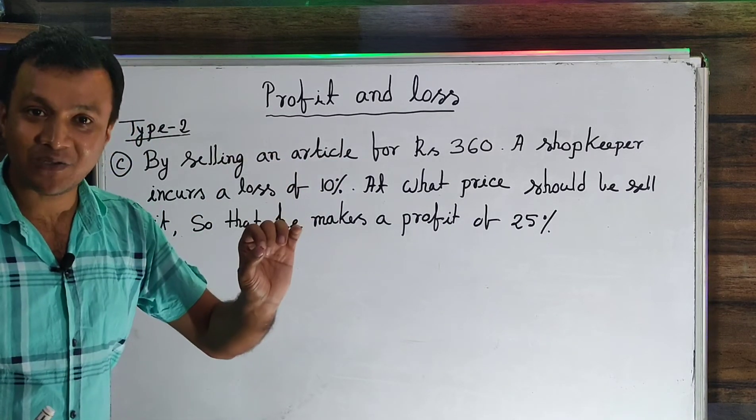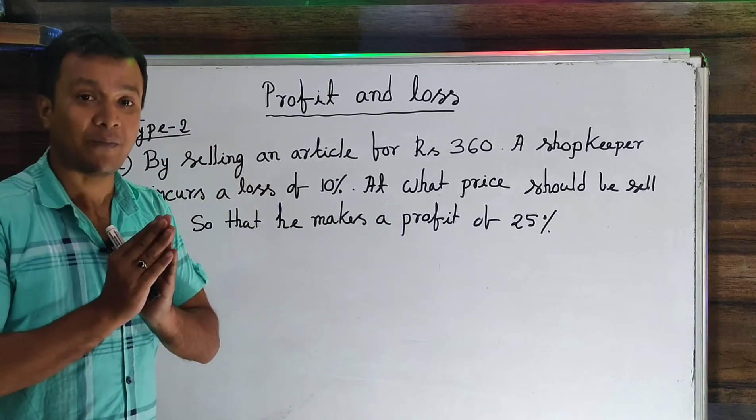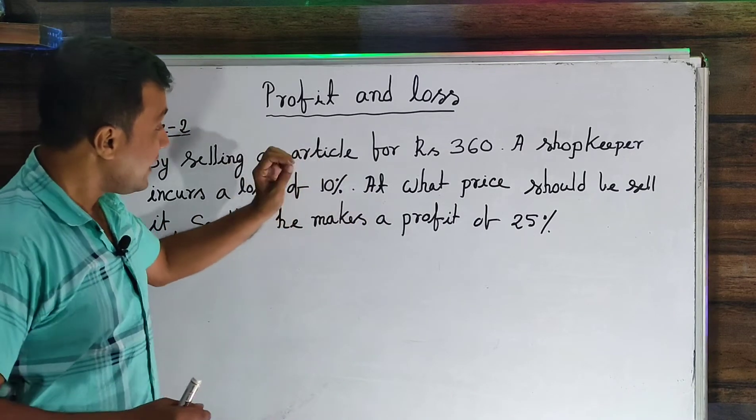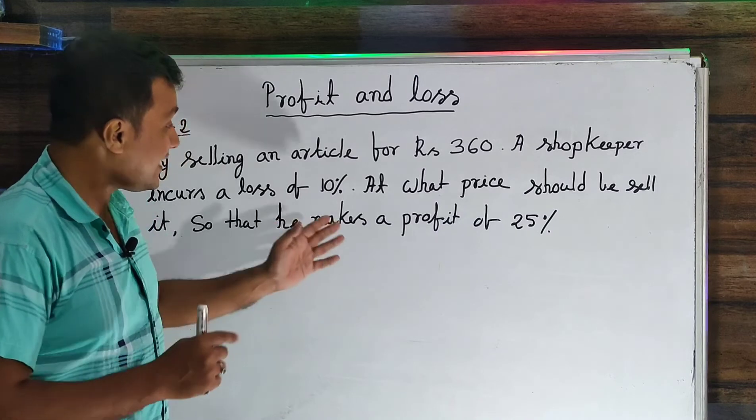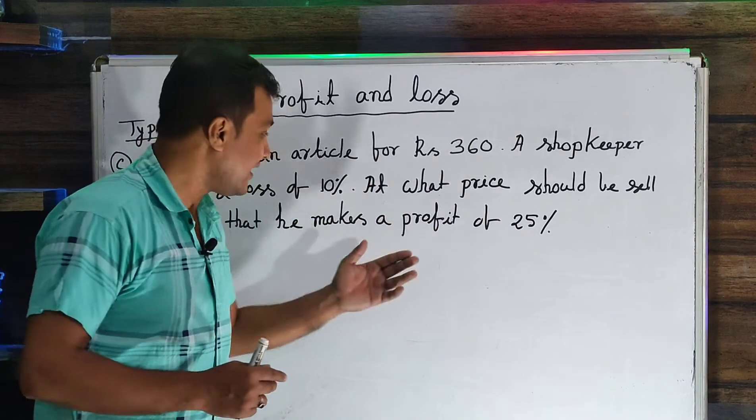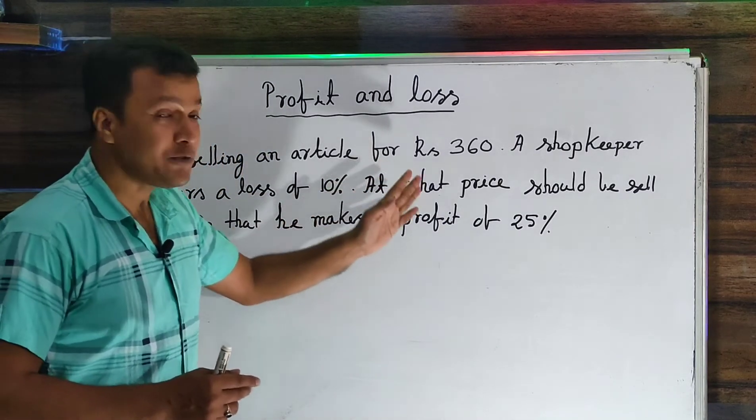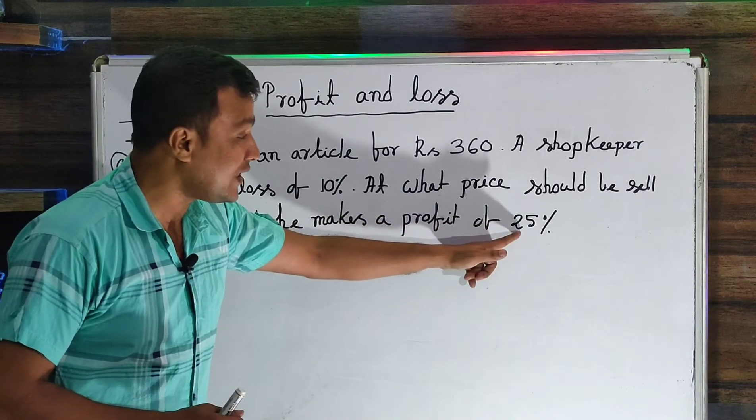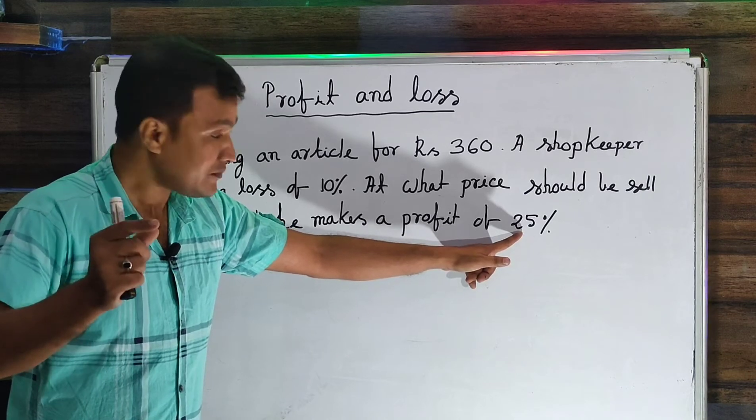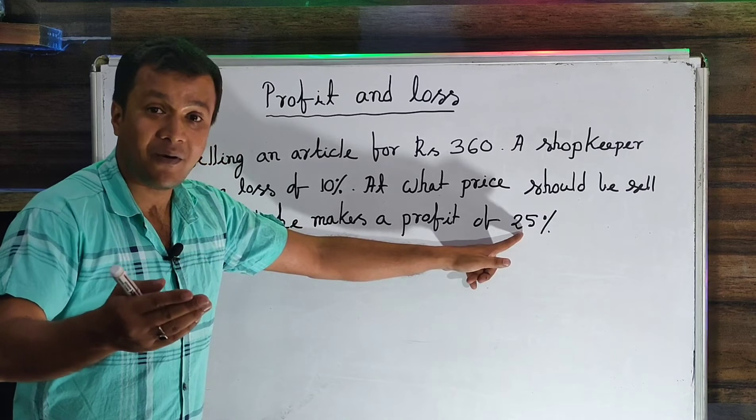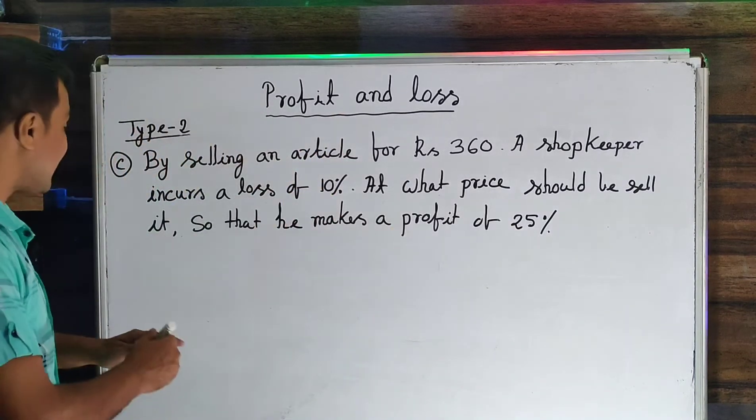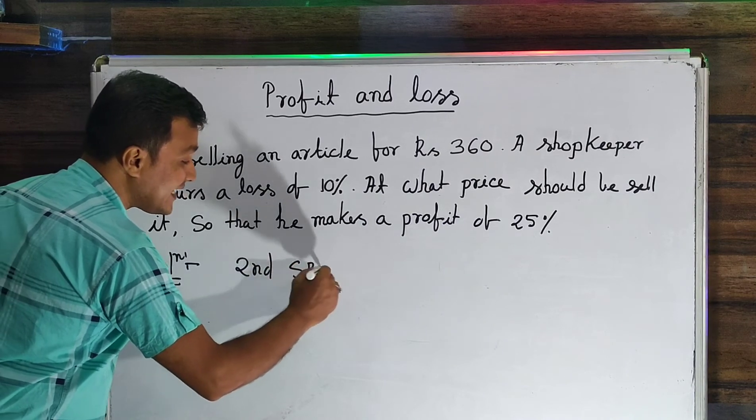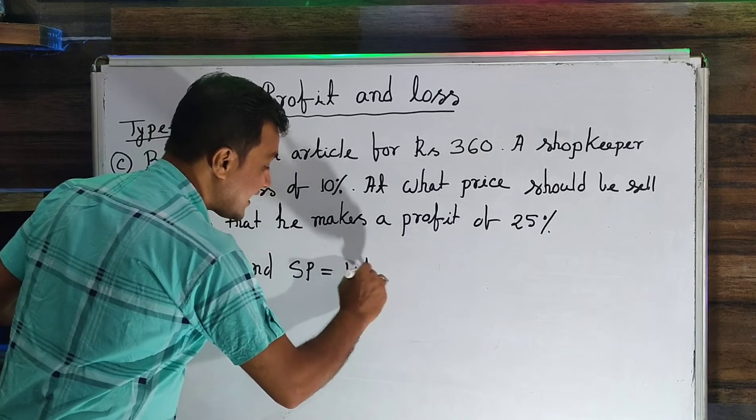If I had 10% loss, CP is 100 and SP becomes 90. So when we get 10% loss, we get 90. Now we need profit. For 25% profit, we add 25 to 100, which equals 125. The formula is: First SP into second profit percentage divided by first loss percentage.